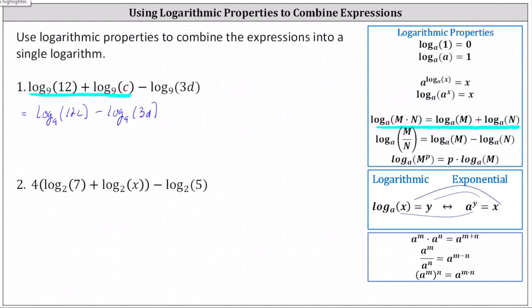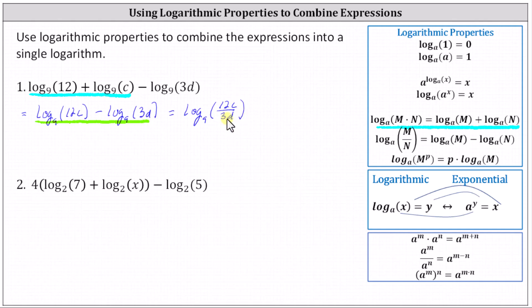We can now combine using the log property: log base A of M minus log base A of N equals log base A of M divided by N. This indicates we can combine the difference of logs as log base nine of 12C divided by 3D. But we're not quite done yet — notice 12 divided by three is equal to four, so we can write the final log expression as log base nine of 4C divided by D.